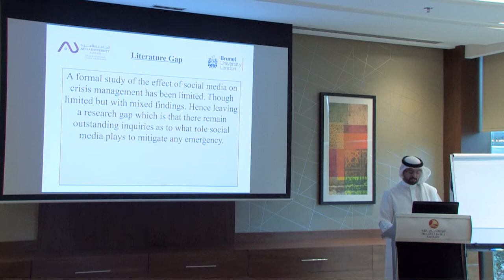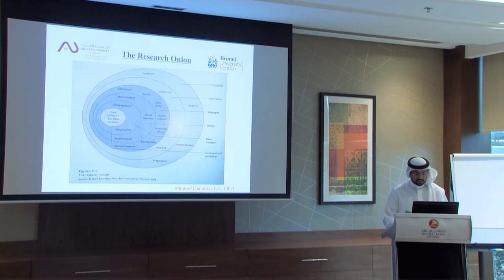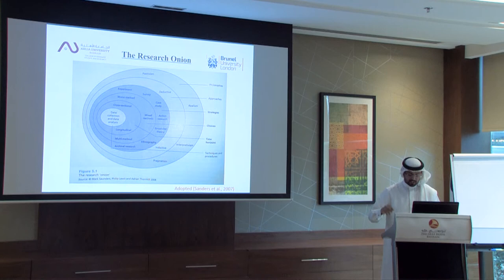This is called the research onion. As you know, onions have layers — this one has six. The research onion has layers of methodology broken down into a group of six, which consists of philosophies, approaches, strategies, choices, time horizons, techniques, and procedures. For the research that will be conducted, we'll just need a handful of these.